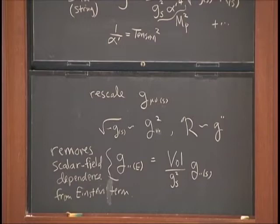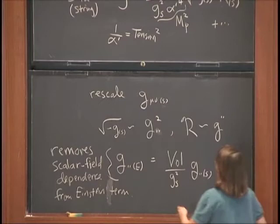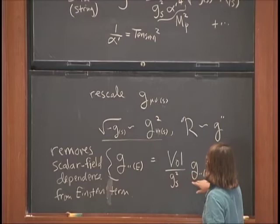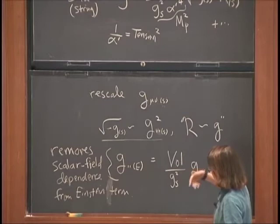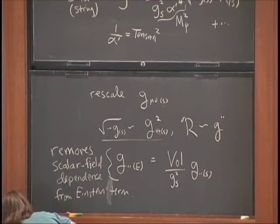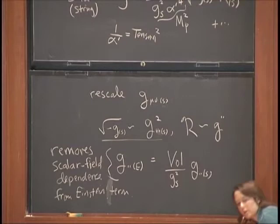As we reduce this action to four dimensions — now focusing on terms that become potential energy terms — we have the string metric appearing here. Since the square root of the determinant scales like two powers of the lowered metric, to write in terms of the Einstein metric, the square root of the determinant gives a factor of g-string to the fourth over volume squared in front of every term in the potential. The effect is that all sources of stress energy — including the D-minus-10 term — dilute as we go to large volume and weak coupling.